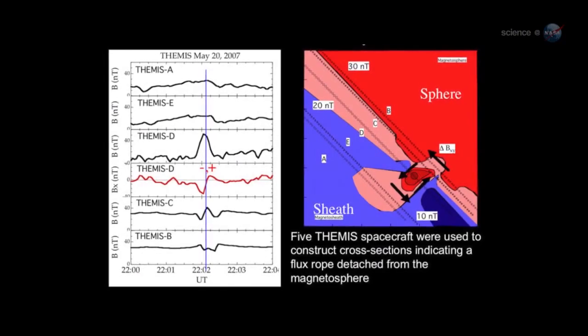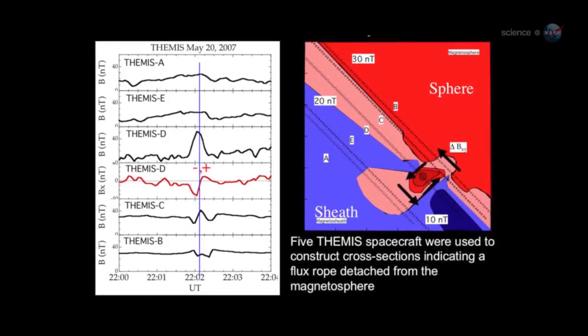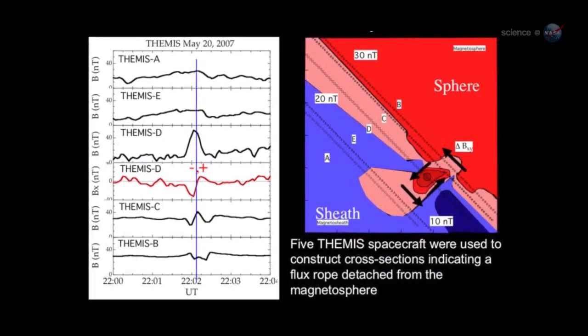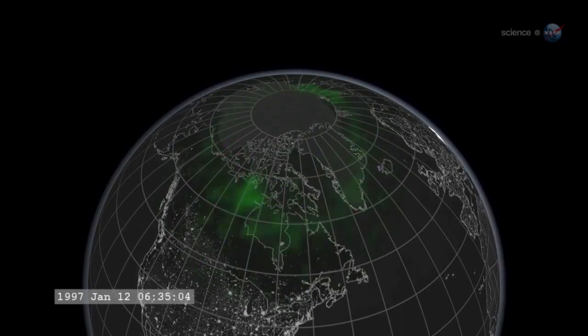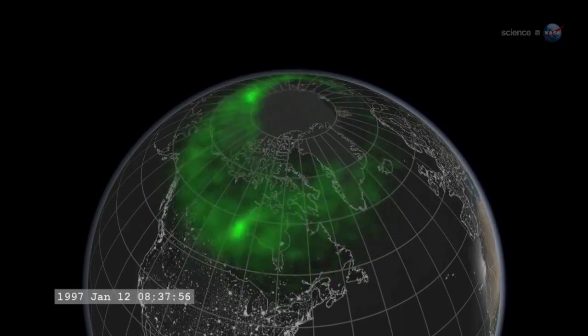Most portals are small and short-lived. Others are yawning, vast, and sustained. Energetic particles can flow through the openings, heating Earth's upper atmosphere, sparking geomagnetic storms, and igniting bright polar auroras.